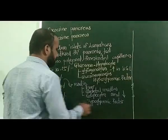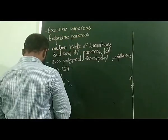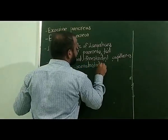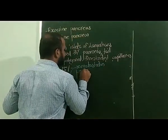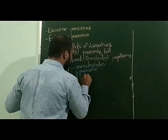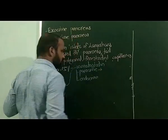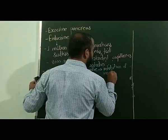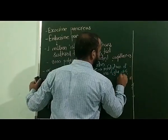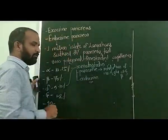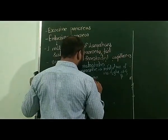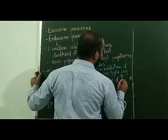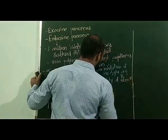The delta cell produces an important hormone called somatostatin. Somatostatin acts as both a paracrine and endocrine hormone. The paracrine role involves the inhibition of insulin and glucagon secretion by alpha and beta cells. The endocrine role involves reducing the motility of the alimentary canal and the gall bladder.